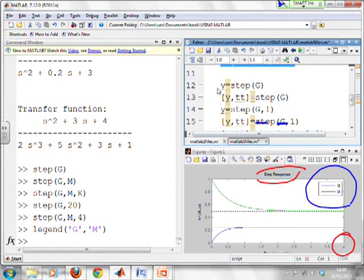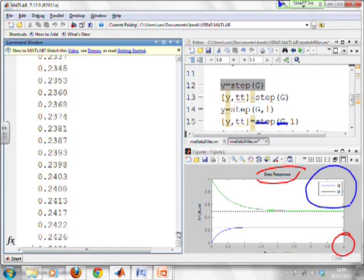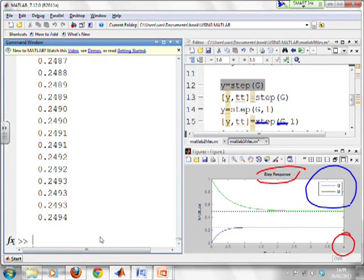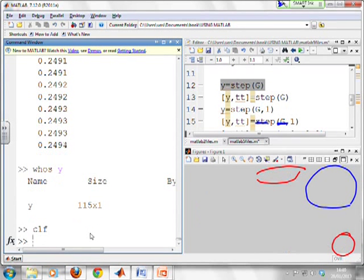OK, so you'll see I've got Y equals step(G) is a possibility. Now, you'll see it's produced, if I scan down this window, lots and lots of different values of Y for me there. How many has it produced? I don't know, but I can go whos Y. And there you can see 115 values. You might think that's a bit arbitrary. I'm just going to clean the figure so we can see that nothing's happening with the figure. So MATLAB's not updating the figure. So when I run the next command, you'll see that's the case.